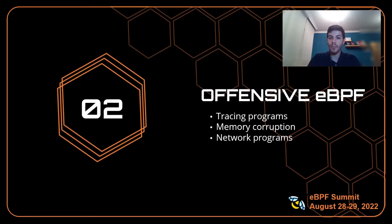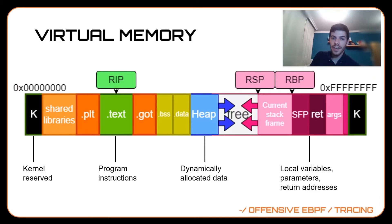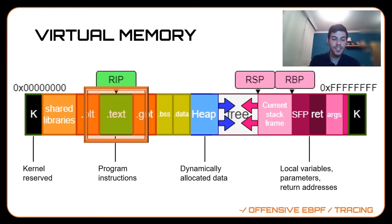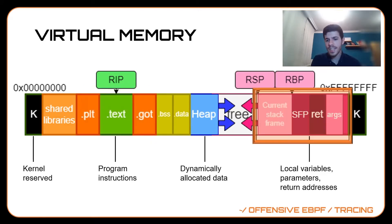We'll assume that you have previous knowledge using eBPF. What you see here is the memory of a process. Essentially, it contains everything that a process executing a program needs for it to run. This is the text section, which contains the instructions of the program being executed, and this is the stack, where you can find variables and other data used during program execution.